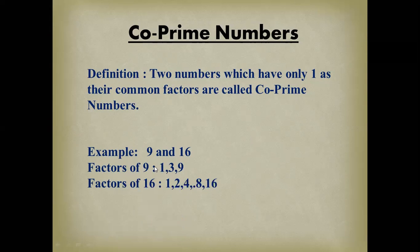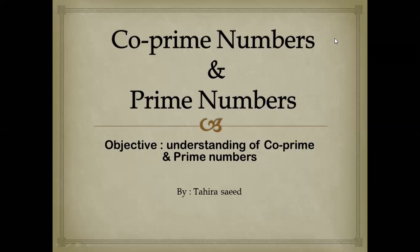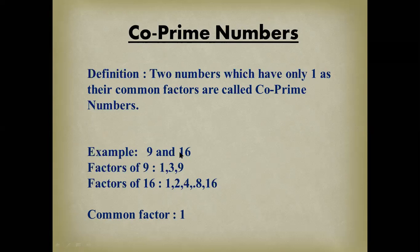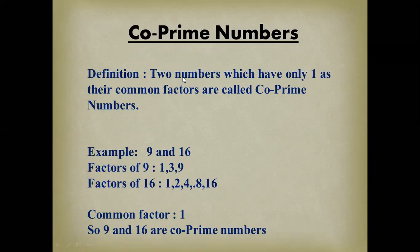Now find the common factor of nine and sixteen. Which number is common in both? The common factor is only one. There is only one common factor, and that is the number one. So nine and sixteen are co-prime numbers. Any pair of numbers which have only one as their common factor are called co-prime numbers.